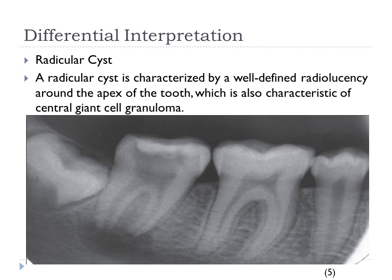A second differential interpretation is radicular cyst. A radicular cyst is characterized by a well-defined radiolucency around the apex of the tooth, which is also characteristic of Central Giant Cell Granuloma. In this periapical radiograph, you can see on tooth number 31 the well-defined radiolucency at the apex.